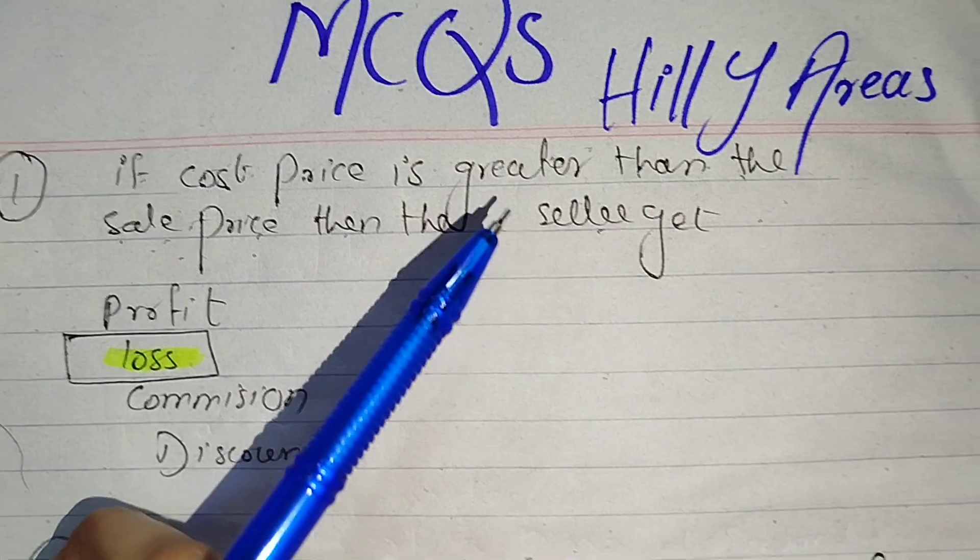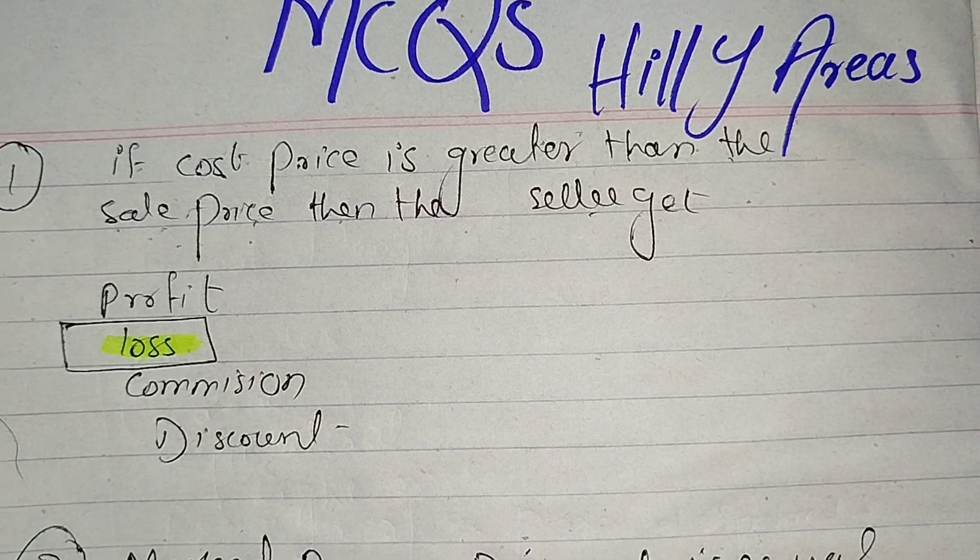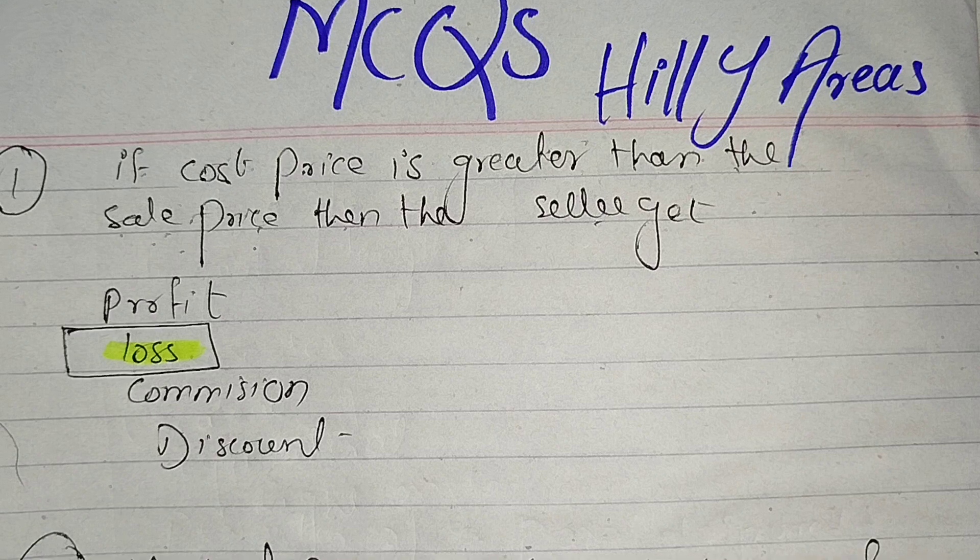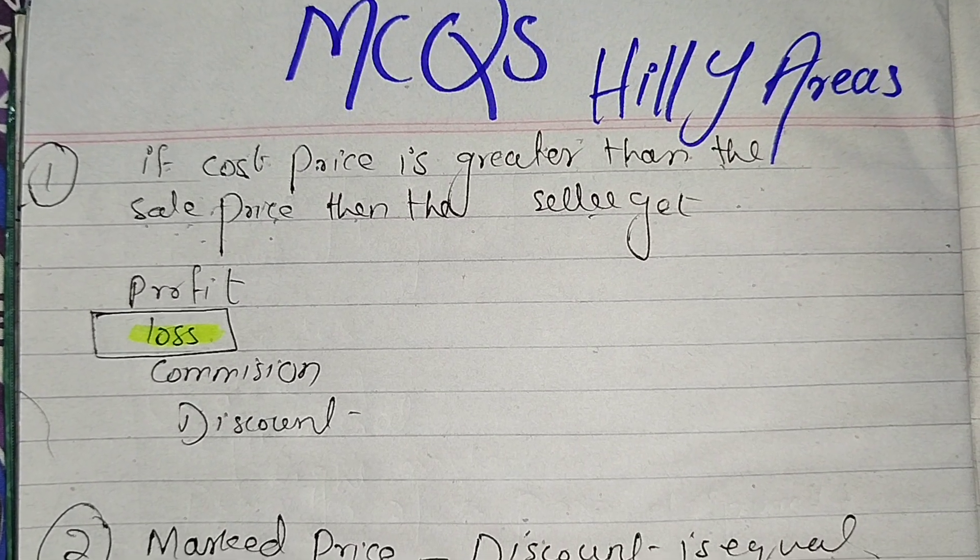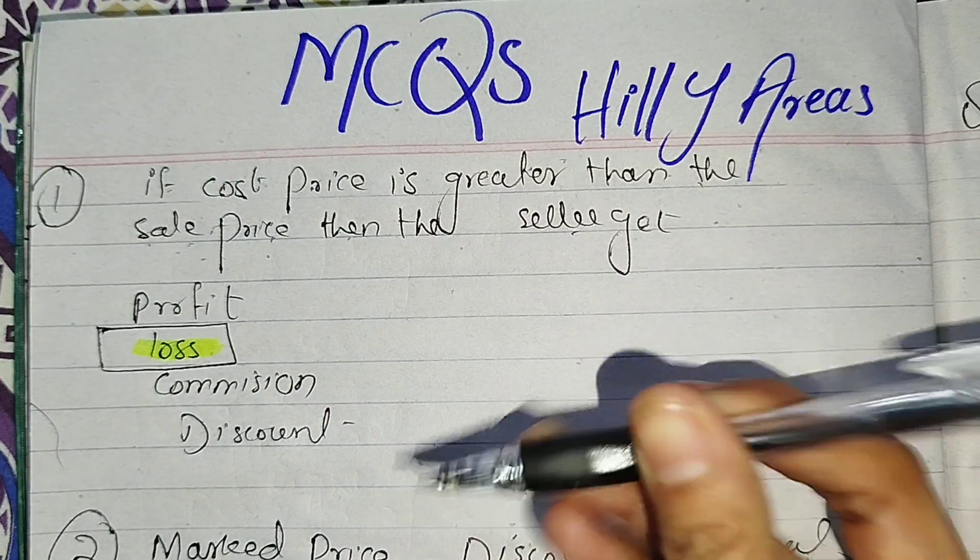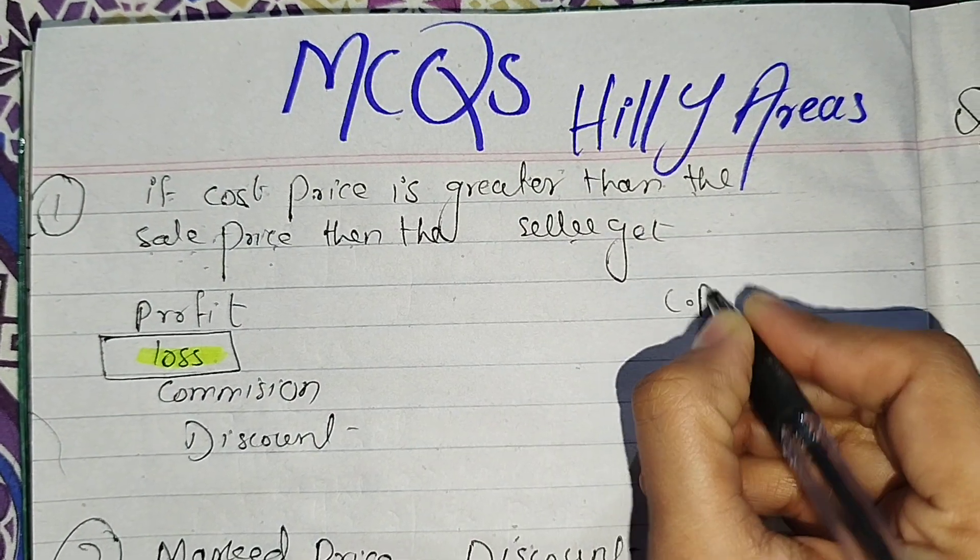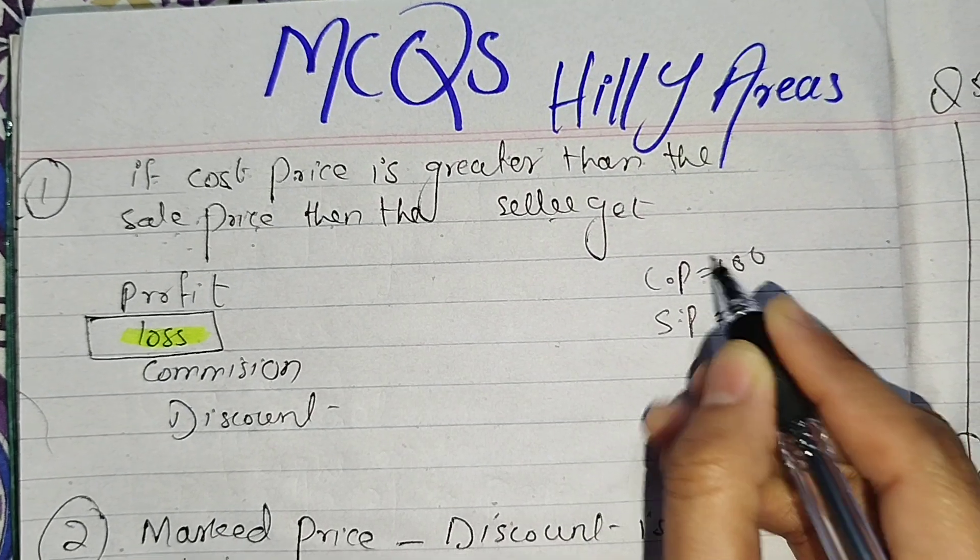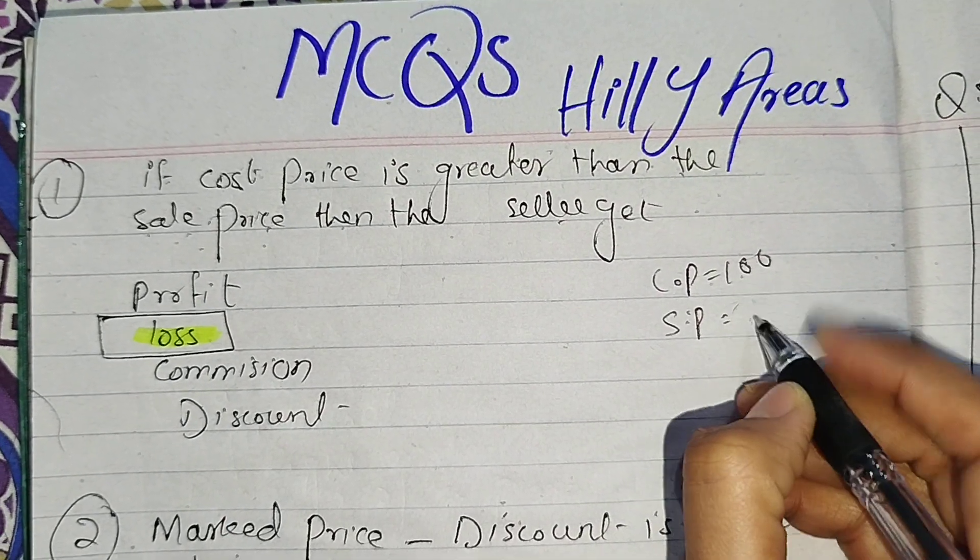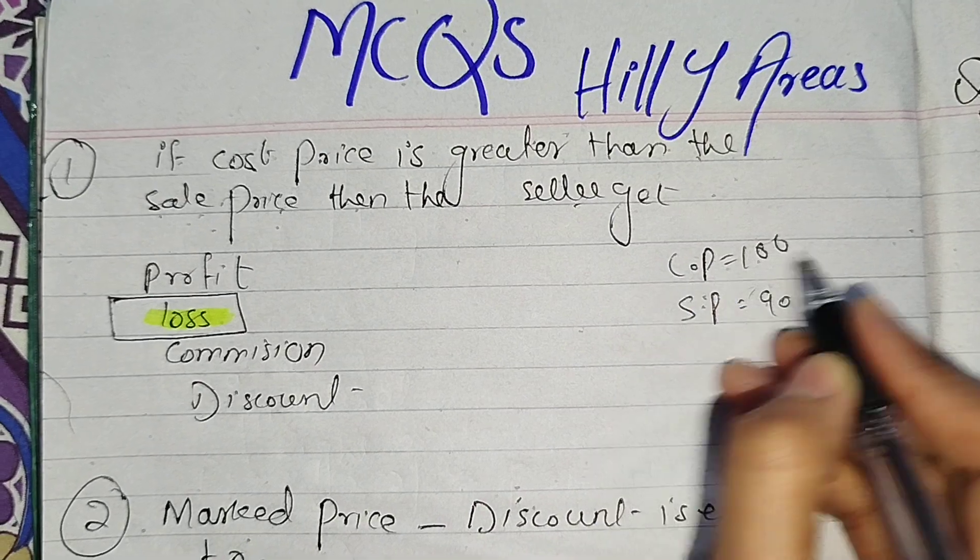If cost price is greater than the selling price, then the seller got a loss. So if cost price will be more and the selling price will be less, let's say cost price is 100 rupees, so CP will be 100, and the selling price will be less, so we'll keep it 90. So you buy expensive and sell cheaper, the seller will have a loss.